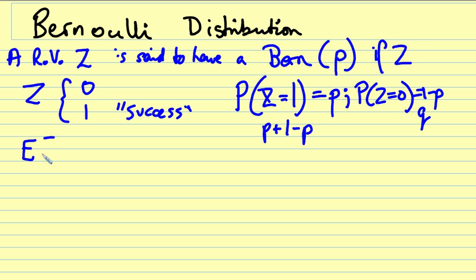The expected value of Z is defined as the sum from z equals zero to one of z multiplied by the probability mass function of z. So it's actually easier to write this longhand than it is to write the sum.